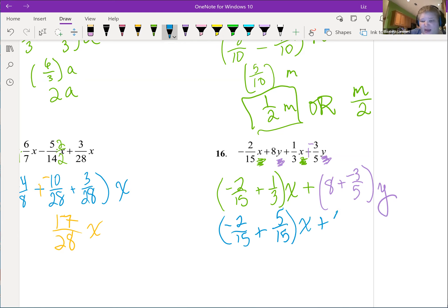I need fifths, so eight is the same as forty fifths plus negative three-fifths still with the y. So over here we have three-fifteenths which will actually reduce, but over here forty minus three is thirty seven.